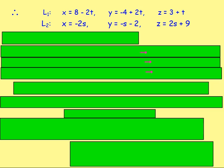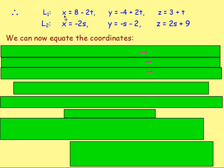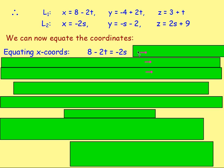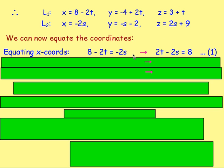Now we can equate the coordinates. For the x-coordinates: 8 − 2t = −2s. Rearranging, adding 2t to both sides, gives us equation 1: 2t − 2s = 8.